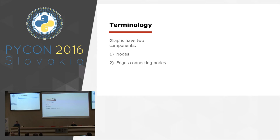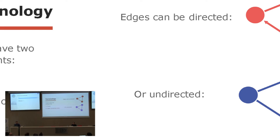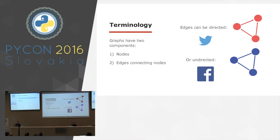Graphs have two components: nodes and edges connecting them. Edges can either be directed or undirected. The way I always explain this is that on Twitter, I can follow Barack Obama — that doesn't mean he follows me. But on Facebook, if I friend Barack Obama and he accepts, then we are symmetric friends.